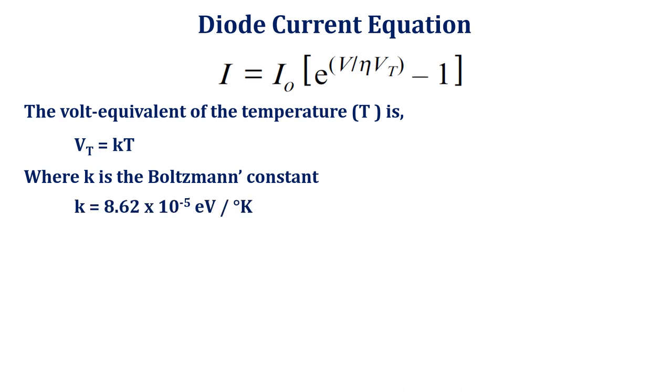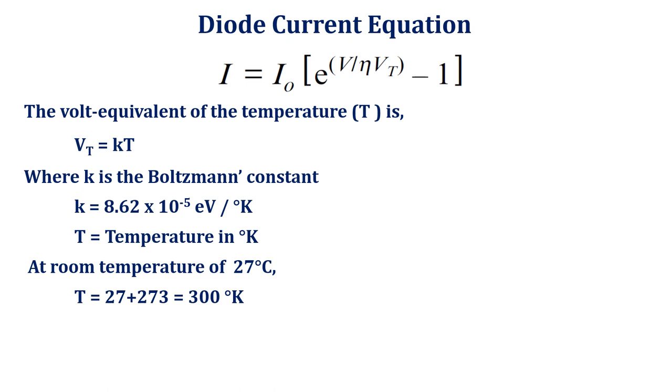T is the temperature in degree Kelvin. At room temperature of 27 degrees Celsius, T equals 27 plus 273 equals 300 degree Kelvin. Then the value of Vt is 26 millivolts.